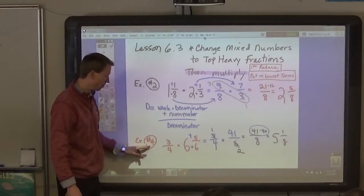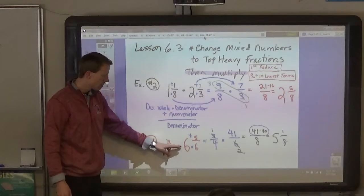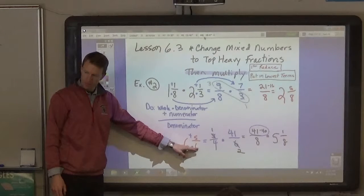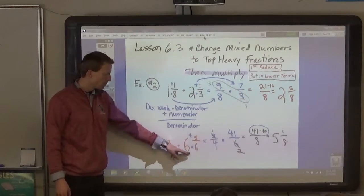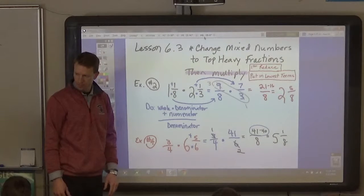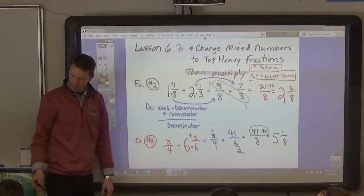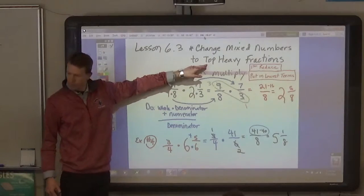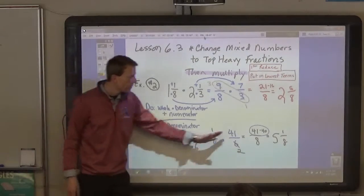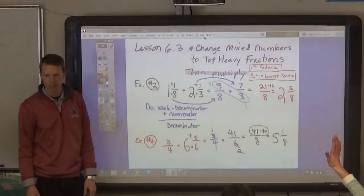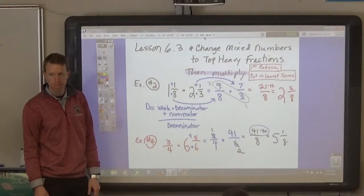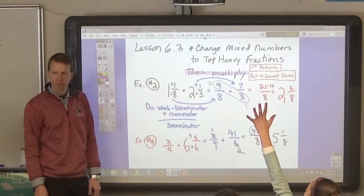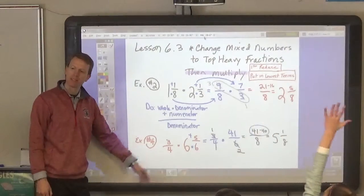Okay? Look at this example. Number four. Three fourths times six and five sixths. Read that. Three fourths times six and five sixths. Now, what do we have to do with six and five sixths, Ariana? Change it to a top-heavy fraction. Which one of these is a top-heavy fraction of six and five sixths?